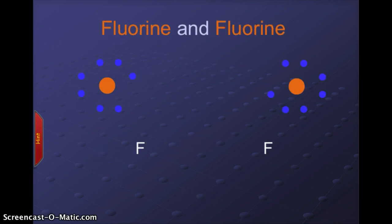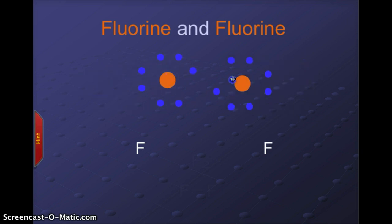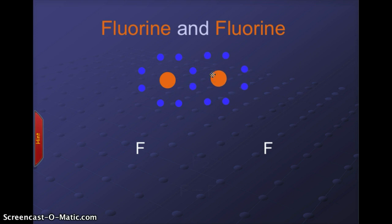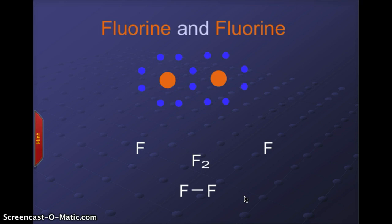If we look at fluorine and take two fluorine atoms: fluorine has seven valence electrons, which means it has one empty space in its outer orbit. By having the fluorine atoms share that pair of electrons in the middle, both atoms get the sense of having eight electrons, following the rule of octet. We now have an F₂ molecule, with each F atom held together by a single bond.